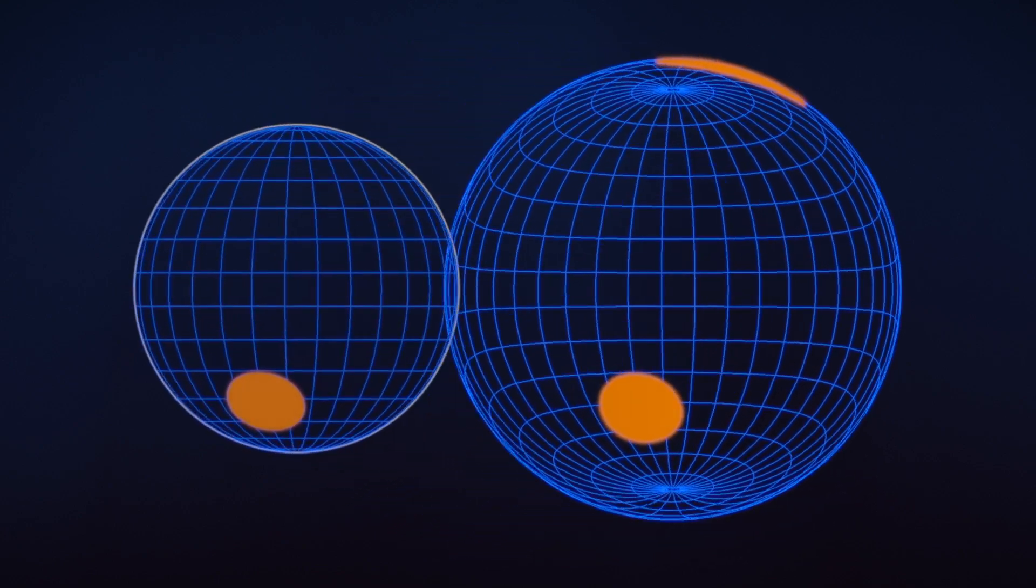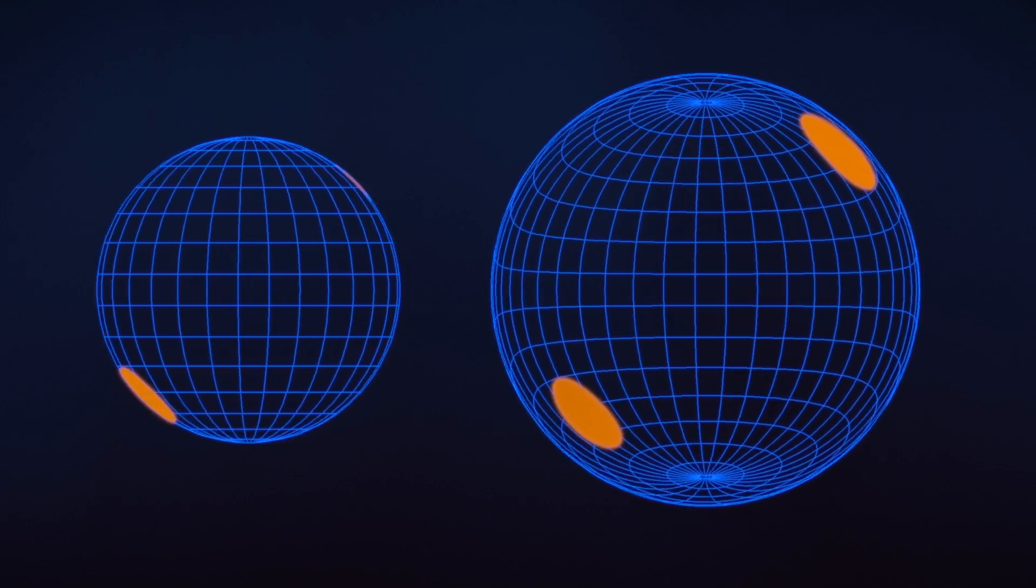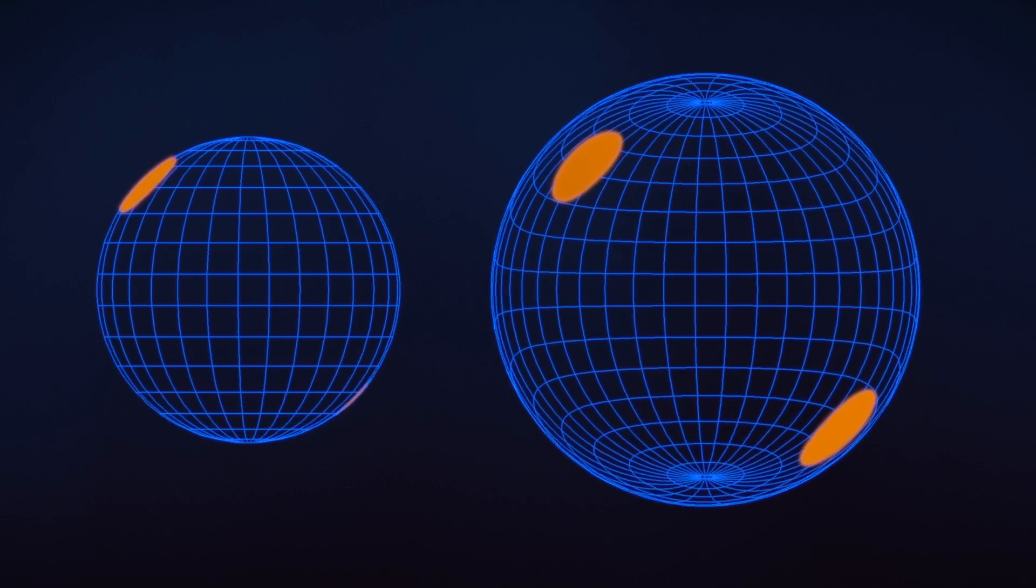If the pulsar's mass is low, the spots disappear when they rotate to the far side. But if the mass is high enough, the hot spots may never completely disappear.